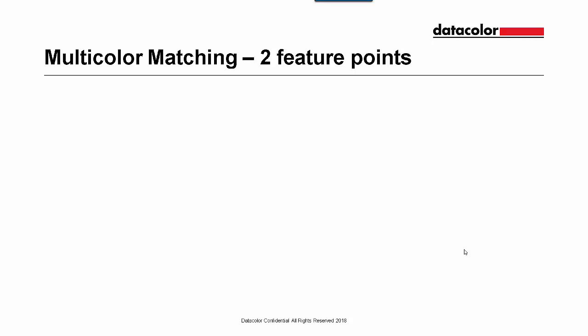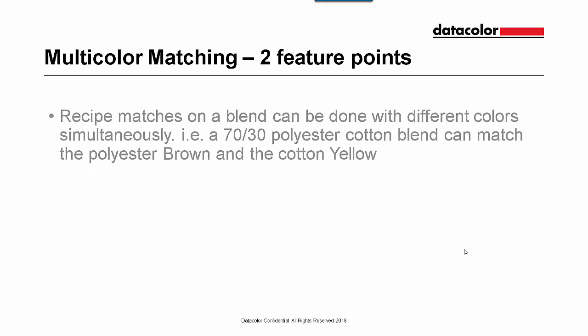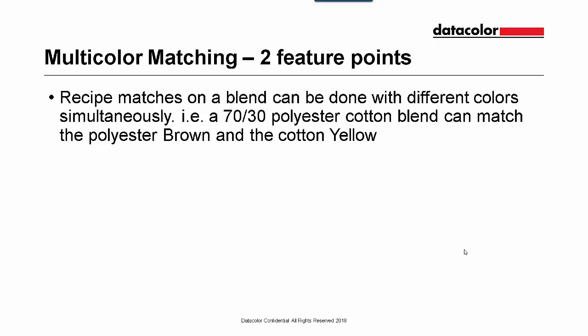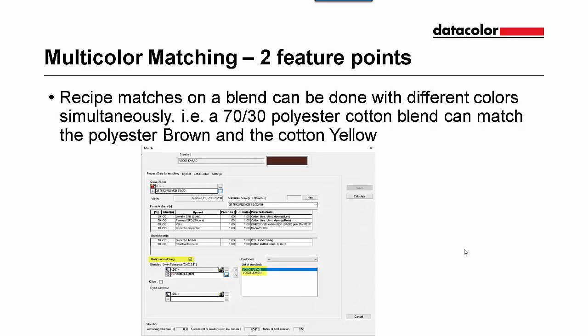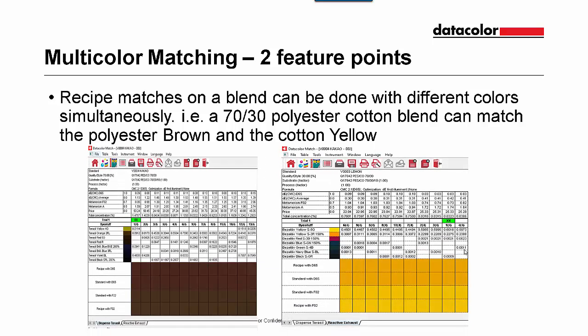Multi-Color Matching is an option worth two feature points. This option allows you to match a blend recipe with more than one color. An example would be a 70-30 poly-cotton blend — you can match the polyester brown and the cotton yellow. On the screen, we activate multi-color matching and select our standards: Cacao for the polyester and Lemon for the cotton. When we formulate, we get recipes for each section of the recipe — so for Cacao, the polyester portion, we have a list of recipes, and for Lemon, the reactive or cotton portion, we have a list of recipes.